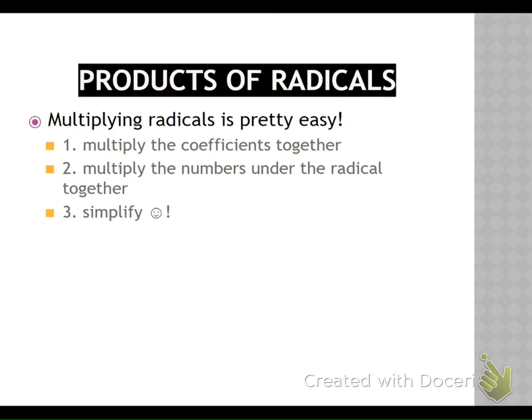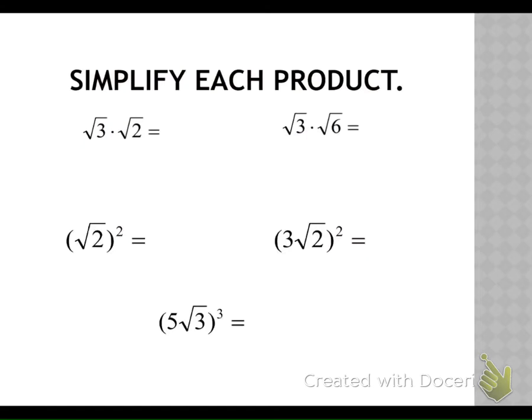Products of radicals — multiplying radicals. What we have to do is our first step: multiply coefficients together, so the numbers out in front of the radicals. The second step is multiply the numbers under the radicals. And then the third step is to simplify — bring it down to the factors and the prime numbers, see which ones have buddies, bring them out front, multiply the ones that don't have buddies back together. Our first one we have the square root of three times two — what's three times two? Six. The factors would be three and two; they wouldn't have a buddy. So it stays square root of six.